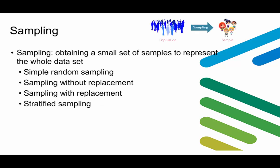Sampling means obtaining a small set of samples to represent the whole dataset, assuming computational complexity is potentially sublinear to the size of the data. Simple random sampling means there is an equal probability of selecting any particular object. Sampling without replacement means once an object is selected, it is removed from the population. Sampling with replacement means the selected object is not removed. Stratified sampling requires approximating the percentage of each class in the overall database before drawing samples, and is usually used with skewed data.